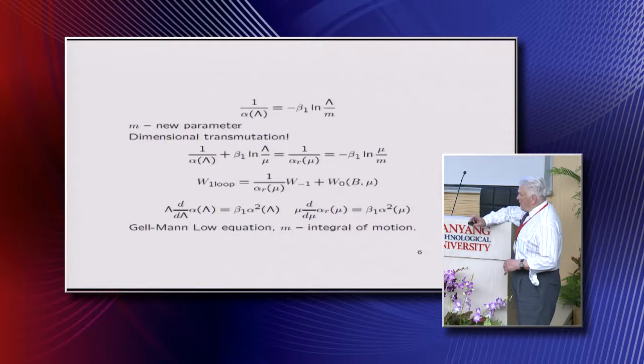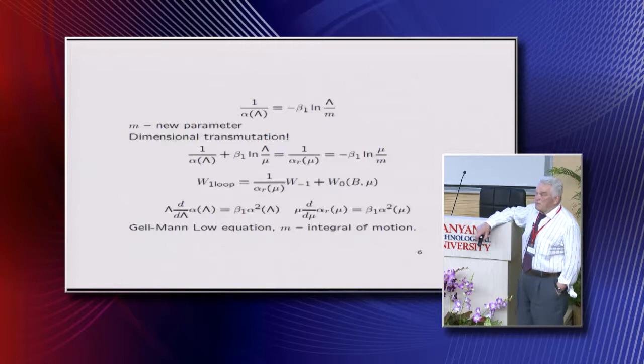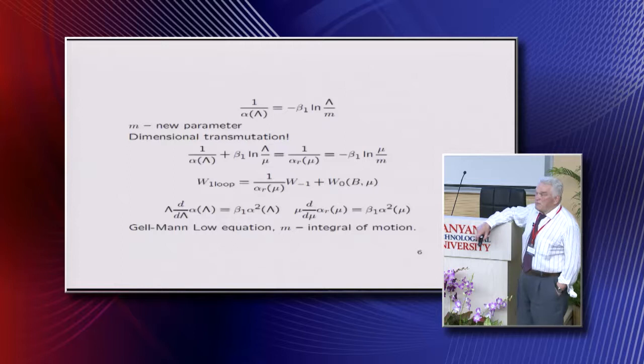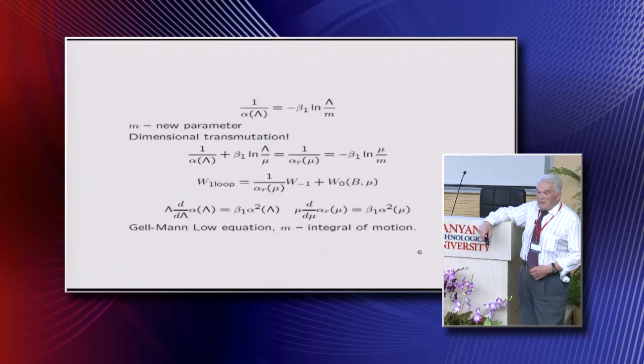So in one loop, having this new parameter M, you have your functional of external field B as finite object, and you can now calculate many things. But instead of dimensionless parameter alpha, you have now dimensional parameter M.